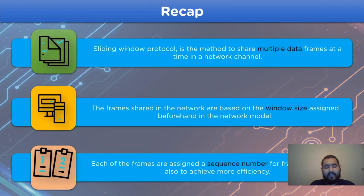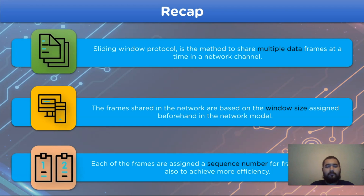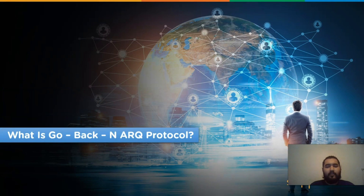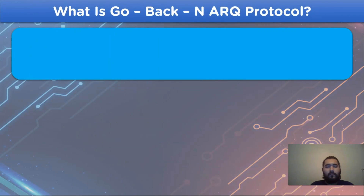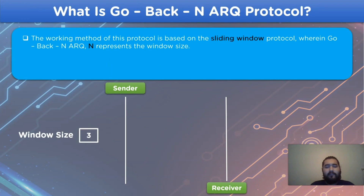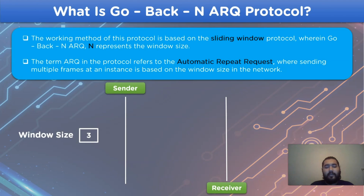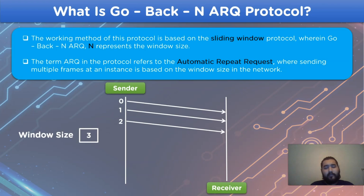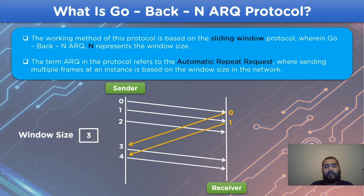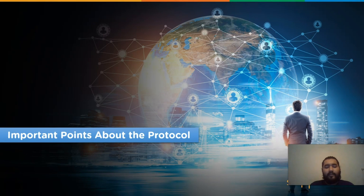Now let's look into some information about the Go-Back-N ARQ protocol. This protocol applies the sliding window method for transmission of data in the network channel, where N in the protocol refers to the window size assigned in the network model. The term ARQ refers to Automatic Repeat Request, which means the sender side will send multiple data frames to the receiver side according to the assigned window size, and only after receiving an acknowledgement from the receiver side will it continue to send frames.